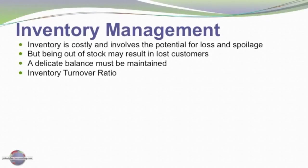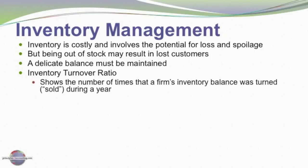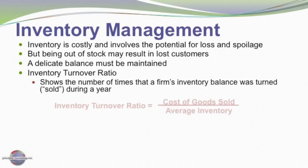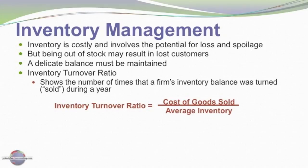Oftentimes a company will calculate an inventory turnover ratio. The turnover ratio shows the number of times each year or each period that inventory recycles or is replenished. It's calculated by dividing the cost of goods sold by the average inventory level.